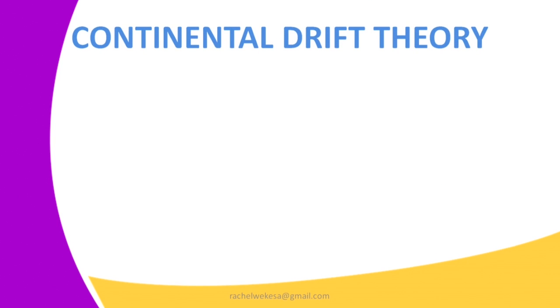Before we start with our lesson today, I'll remind you what we learned about last time. So last time we looked at the internal causes of earth movements and we defined what are internal earth movements. We also defined what is external earth movements. We also looked at the type of movements, that is the horizontal and the vertical movements. We also looked at the causes of earth movements, that is magma movement and convectional movement.